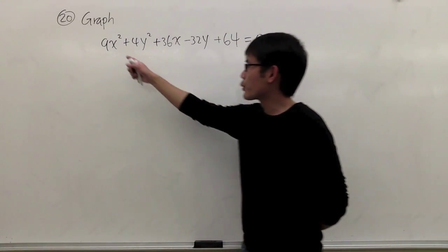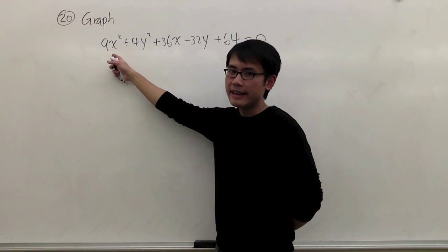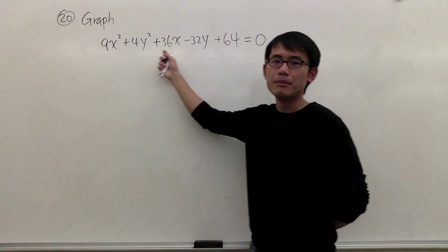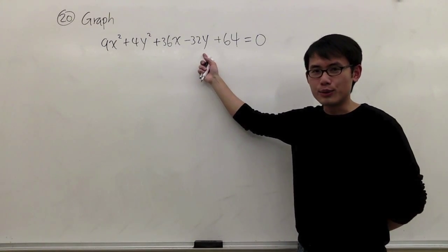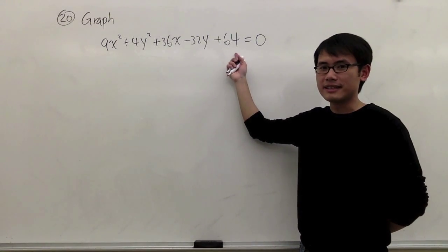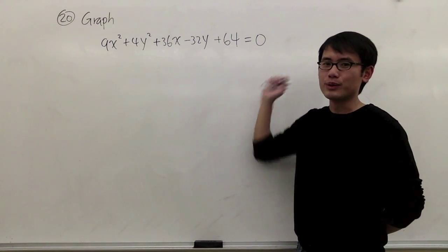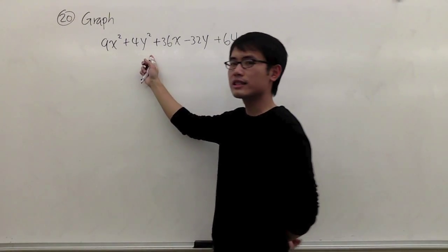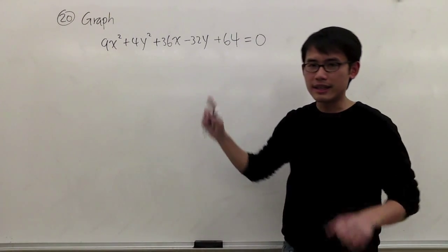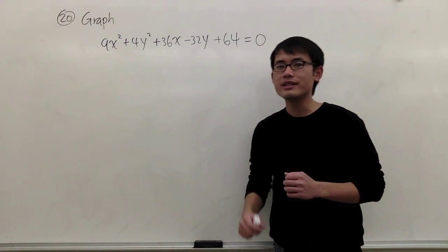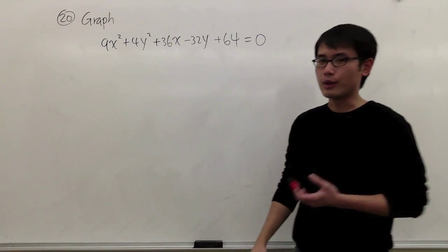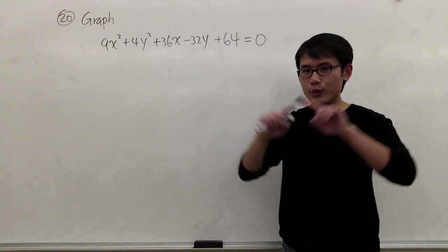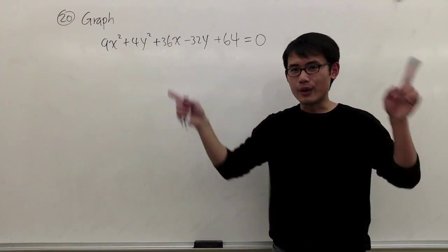For question number 20, we are going to graph 9x squared plus 4y squared plus 36x minus 32y plus 64 is equal to 0. Notice that we have x squared and y squared together in the equation, so we can expect the graph to be either a circle, an ellipse, or a hyperbola.